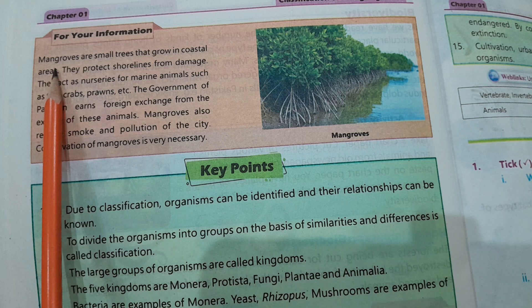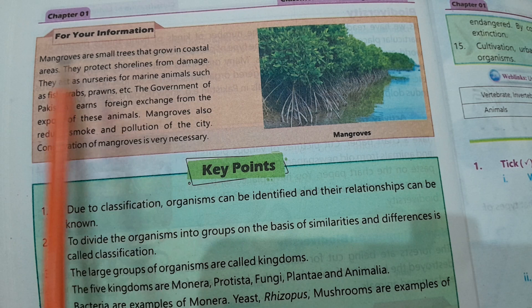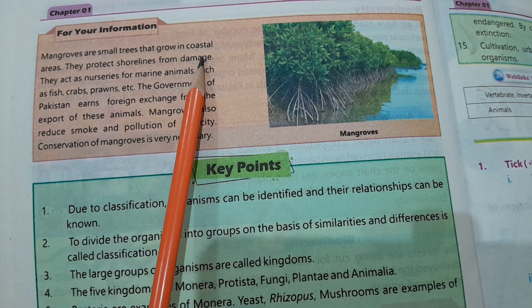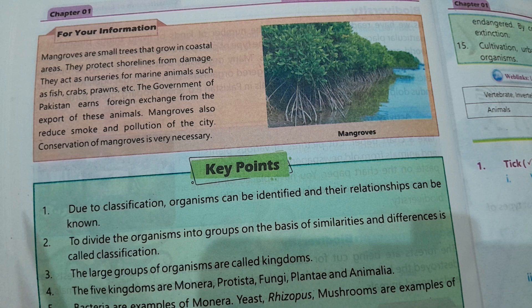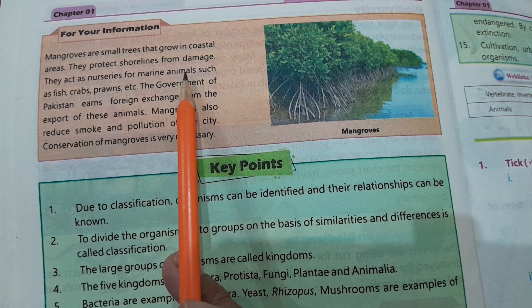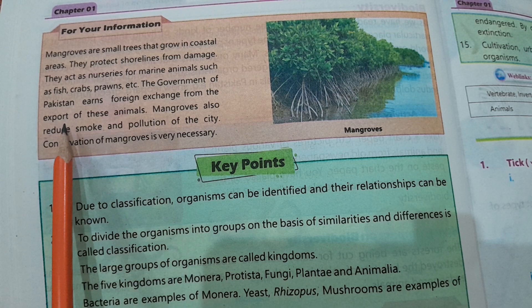Mangroves are small trees that grow in coastal areas — ساحلی علاقوں پر، سمندروں اور دریاؤں کے آس پاس۔ They protect the shoreline from damage. They act as nurseries for marine animals such as fish, crabs, and prawns.